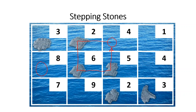The idea is to trace a closed path on all the unoccupied cells and then compute what is known as an improvement index. It is the improvement index for each unoccupied cell that tells you whether the current allocation is optimal or not optimal.